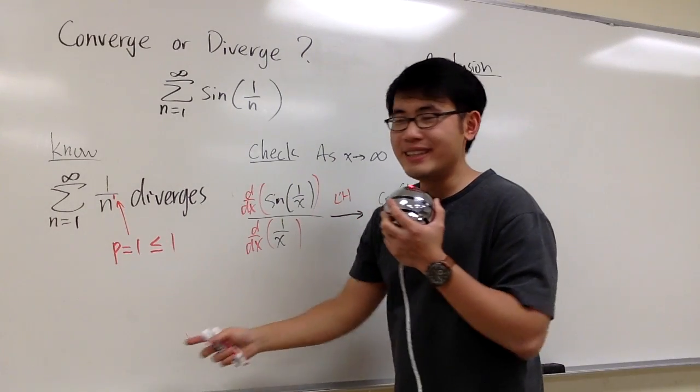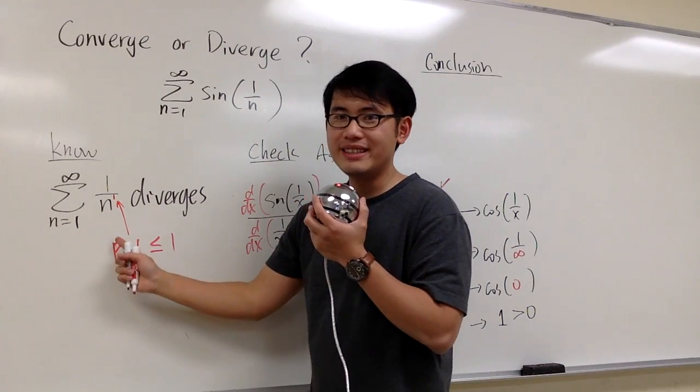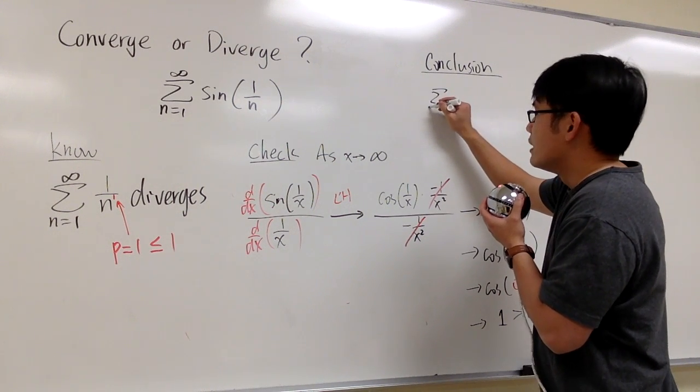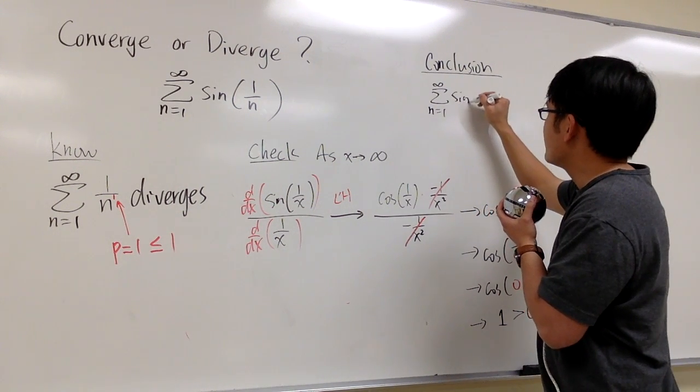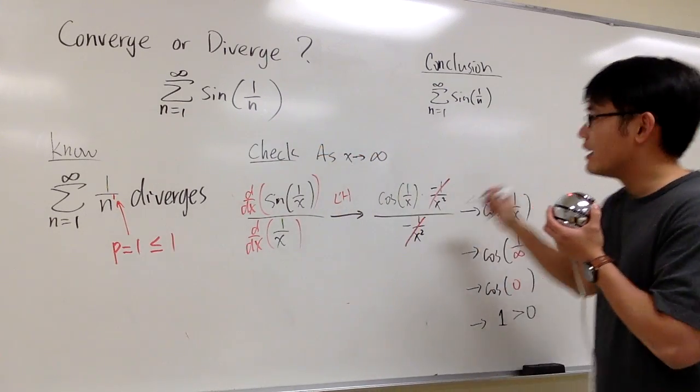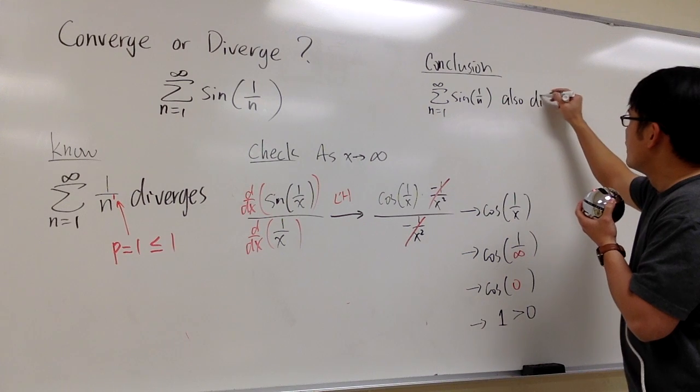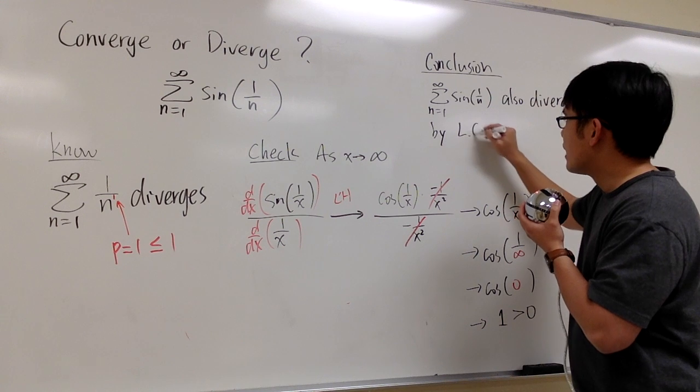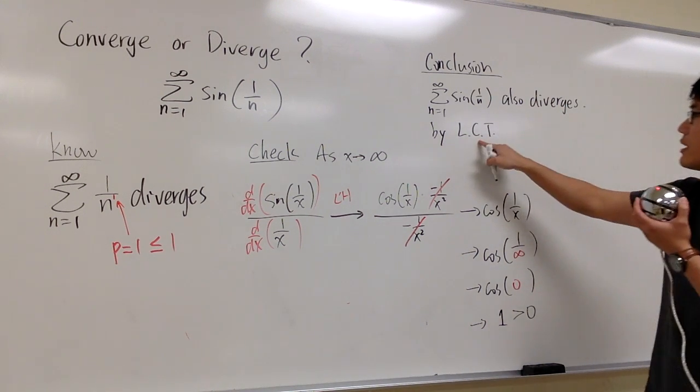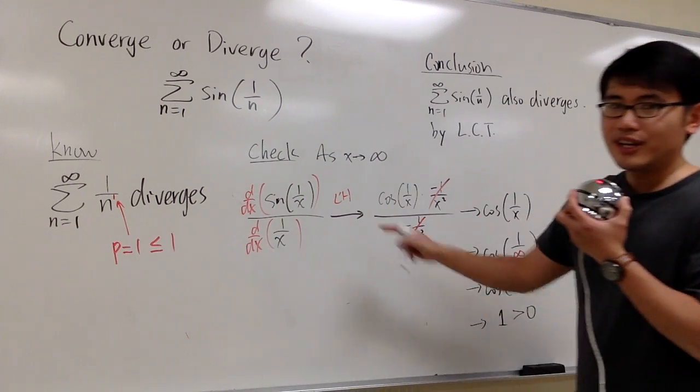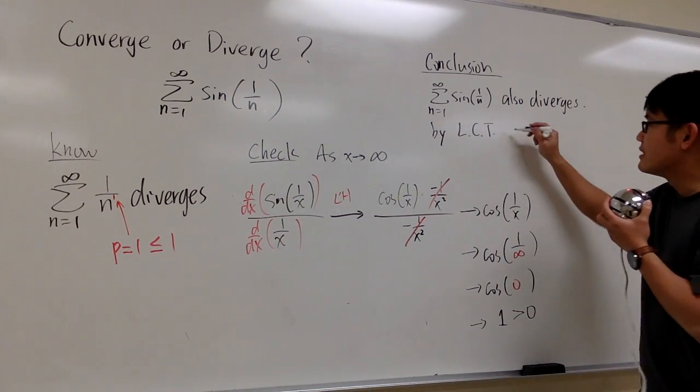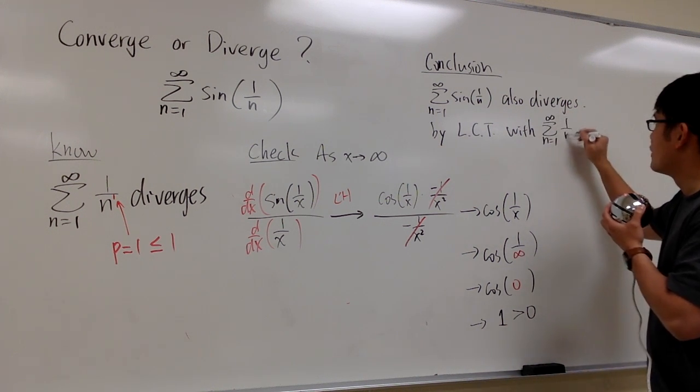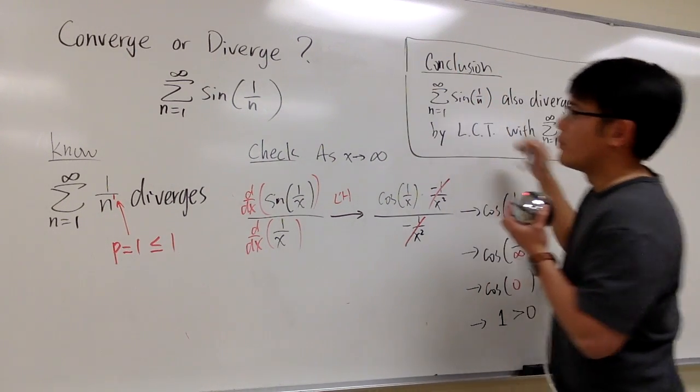Either they both converge or they both diverge. But then, what do we know first? We know this diverges, right? So that means this has to diverge as well. The conclusion is, summation from 1 to infinity, sine of 1 over n, the series that we are checking, this also diverges by the limit comparison test. And you have to put down what you know, and then do the check, do the work. By the limit comparison test, with the series n from 1 to infinity, 1 over n.